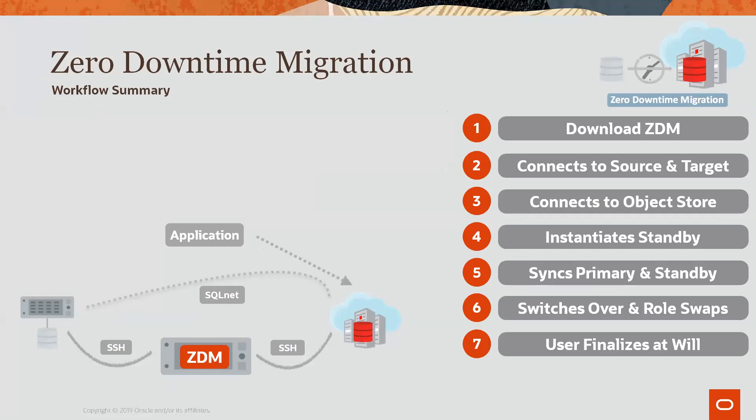This is a summary slide of the entire workflow. In short, you download and install ZDM on a standalone server. That server connects to the source and target database servers. It connects to the object store and does a backup of the source database onto the object store. It instantiates the standby on the target using this backup from the object store. It synchronizes the primary and the standby. Once the synchronization is complete, it switches over and changes the role of the target to be the new primary. Finally, the user decides when to stop this process.